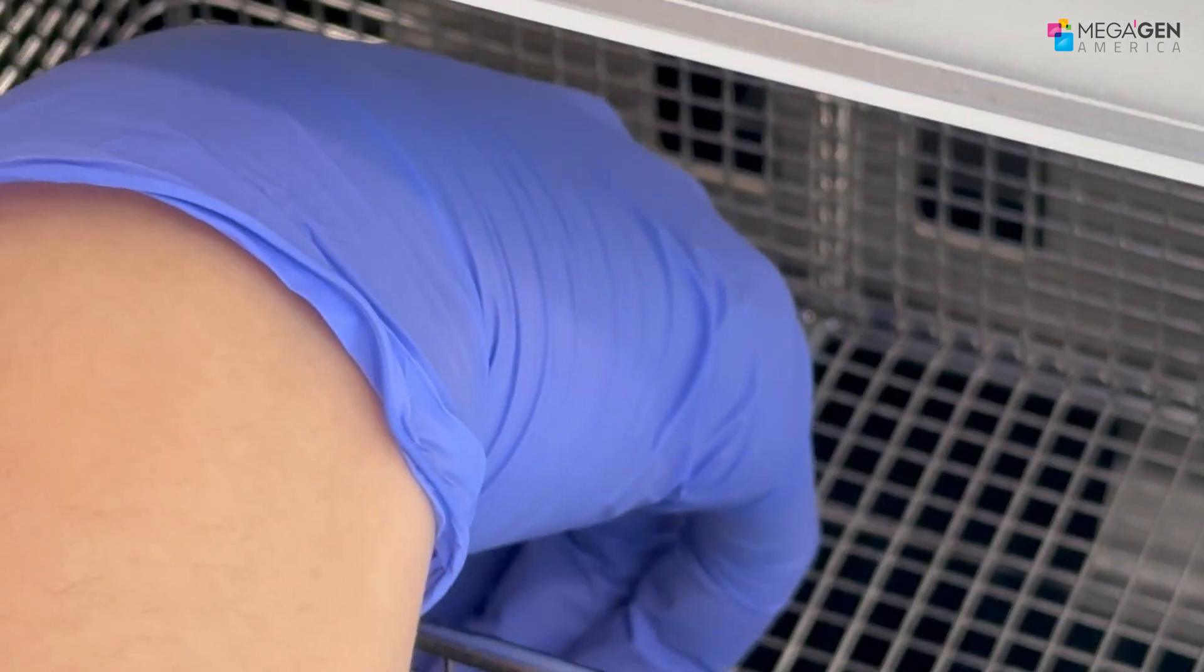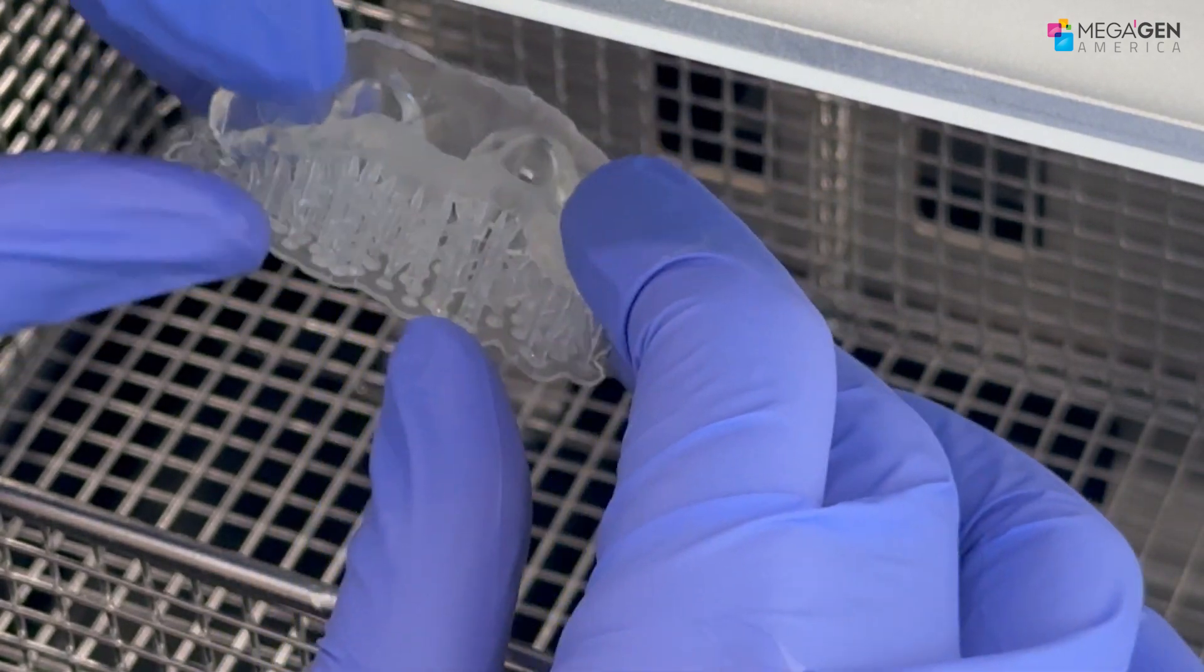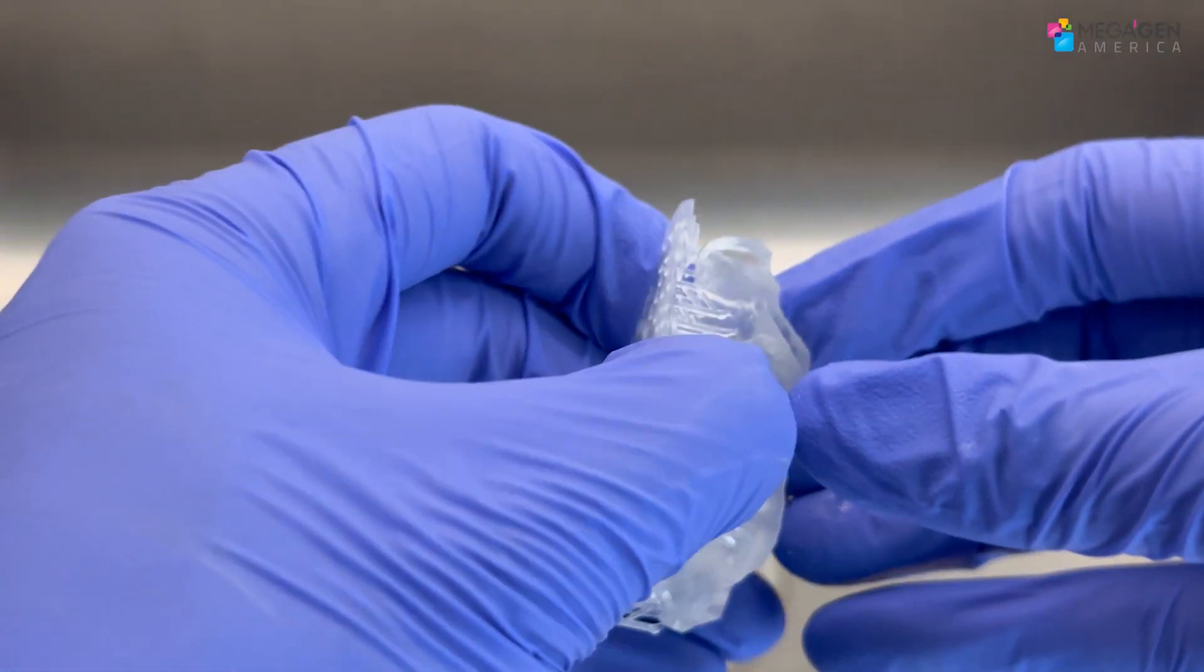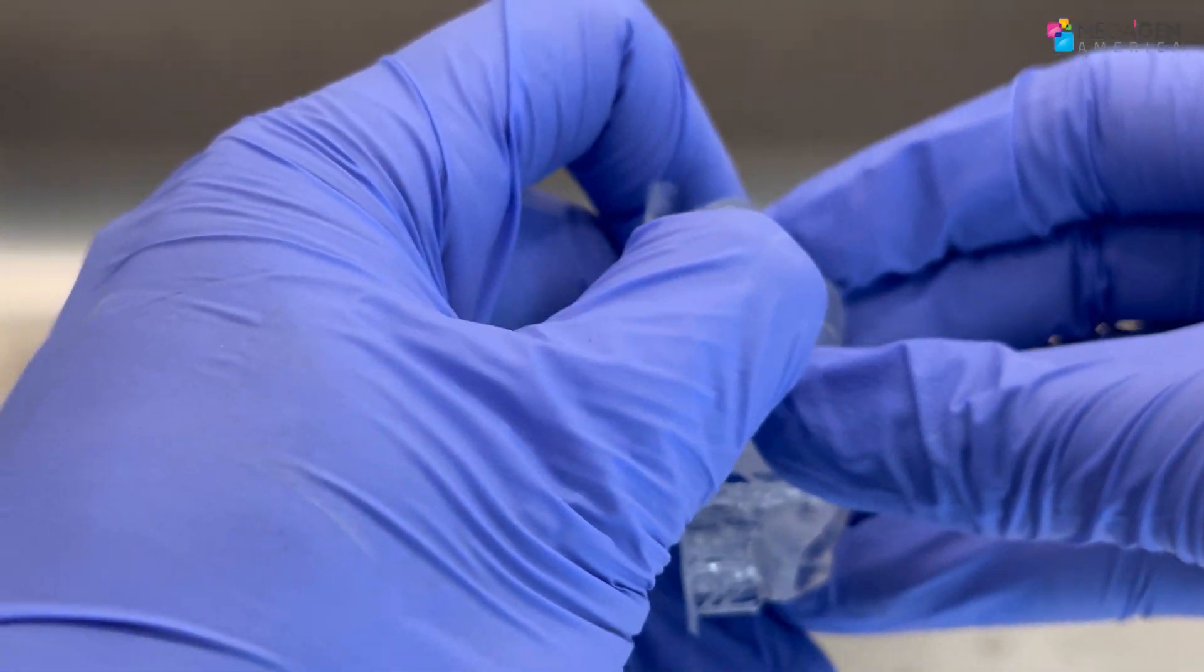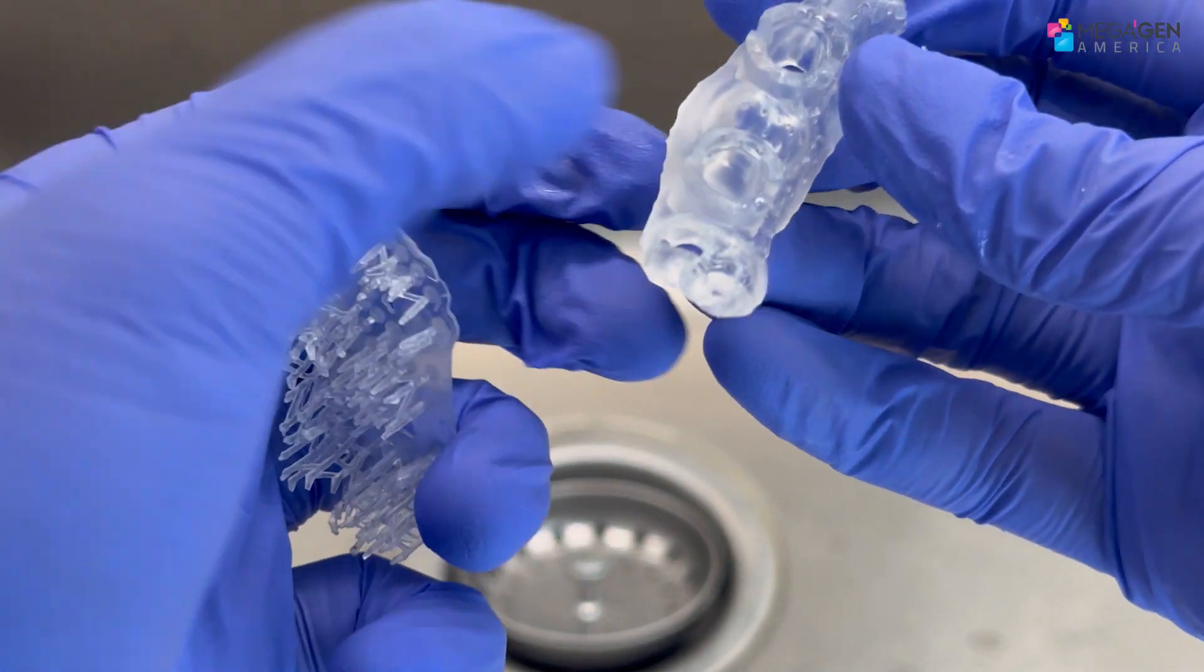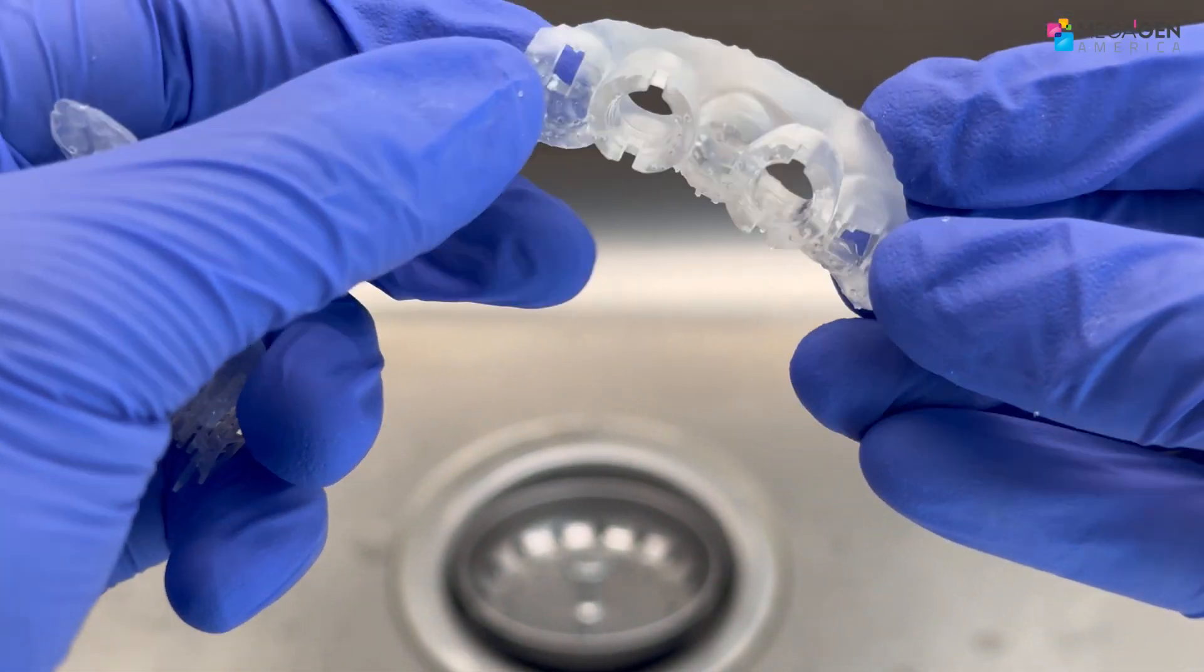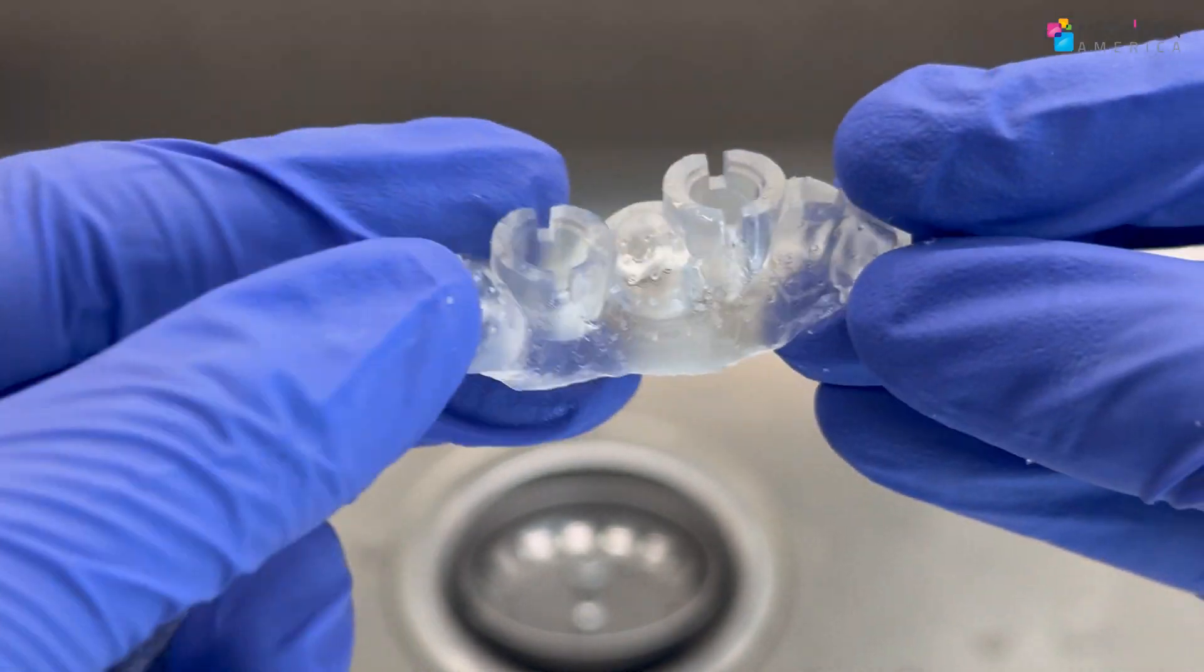Now the washer is finished, I recommend getting an air gun to dry the model and remove the support by hand. You can air dry, but it'll take longer.